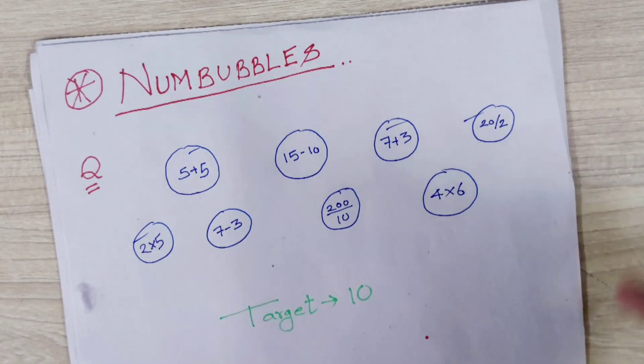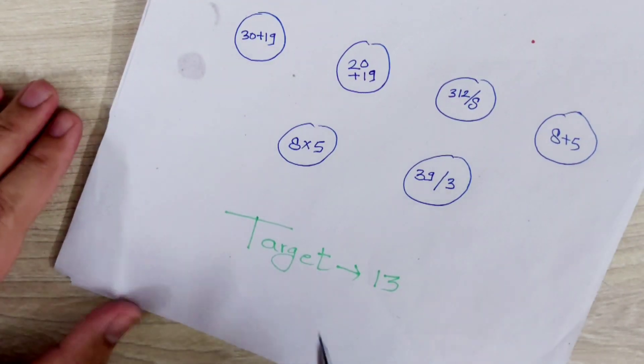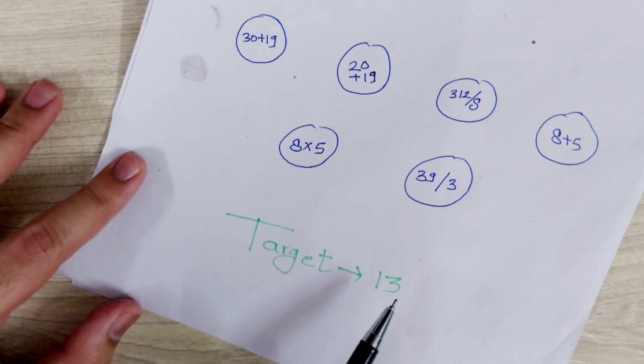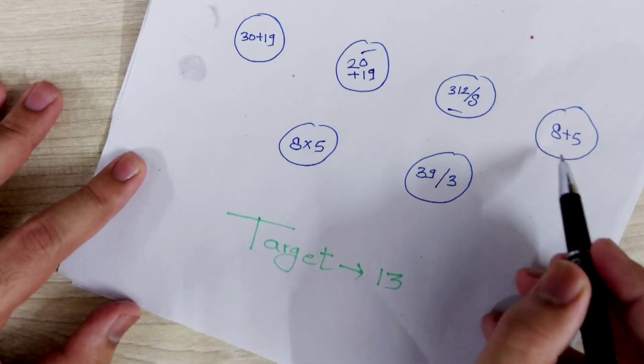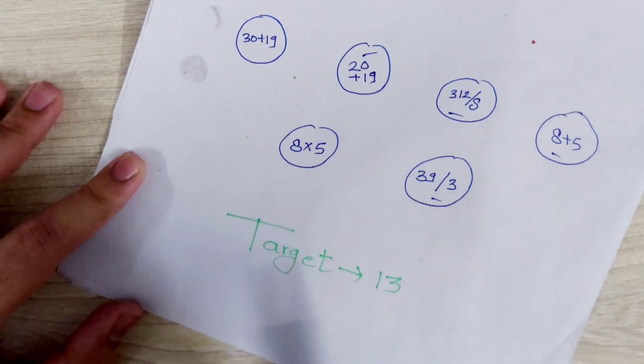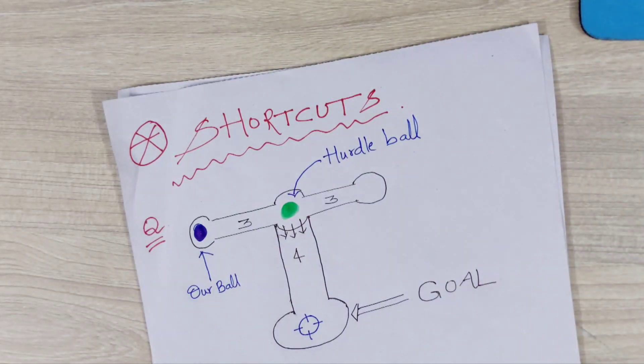Let's do one another example. Target is 13. So tap, tap, tap, tap, tap.